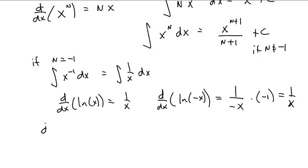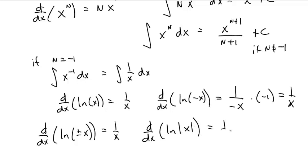So basically, the derivative of the natural log of plus or minus x is 1 over x. Or more briefly, the derivative of the natural log of the absolute value of x is 1 over x.